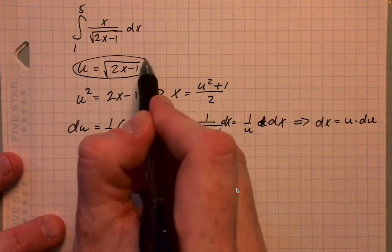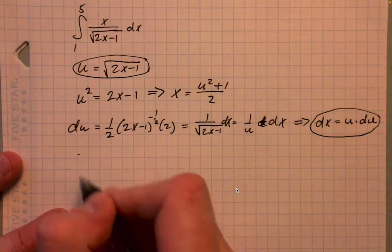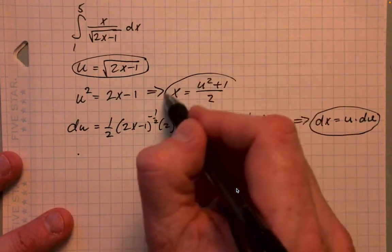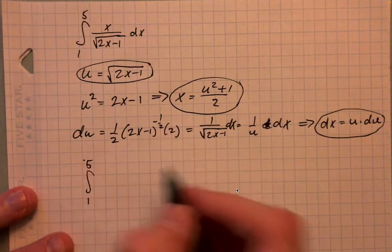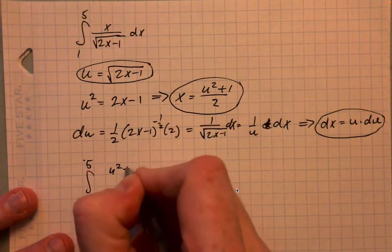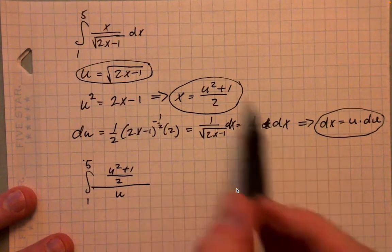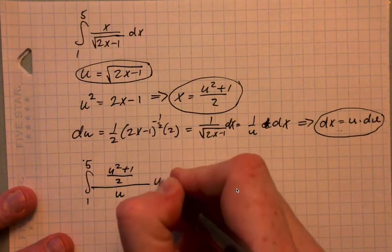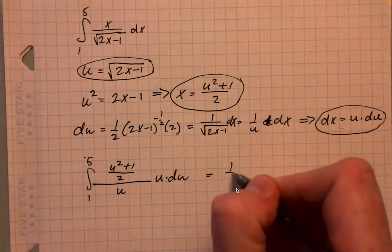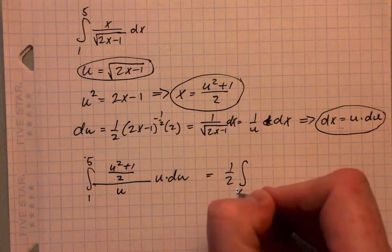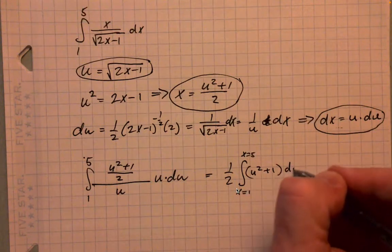So this piece here, together with this piece here and this piece here, those three pieces can be used to substitute into this expression from 1 to 5. So the x is u squared plus 1 over 2, and the denominator here is just u, and then the dx is u times du. And all of this simplified down greatly into 1 half times the integral from x equals 1 to x equals 5 of u squared plus 1 du.